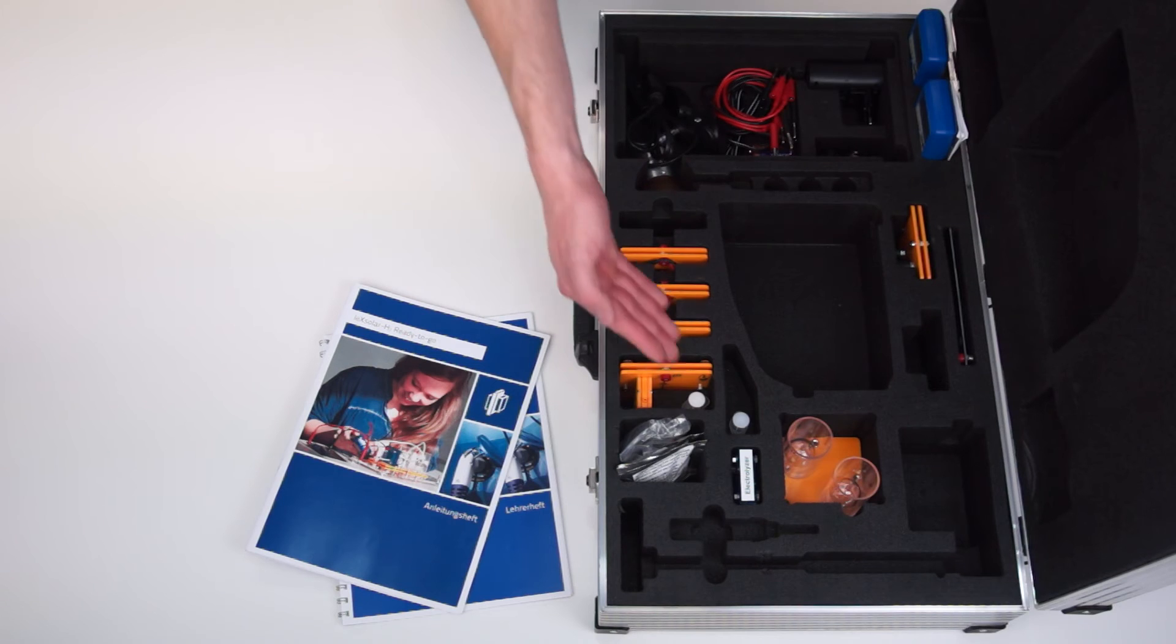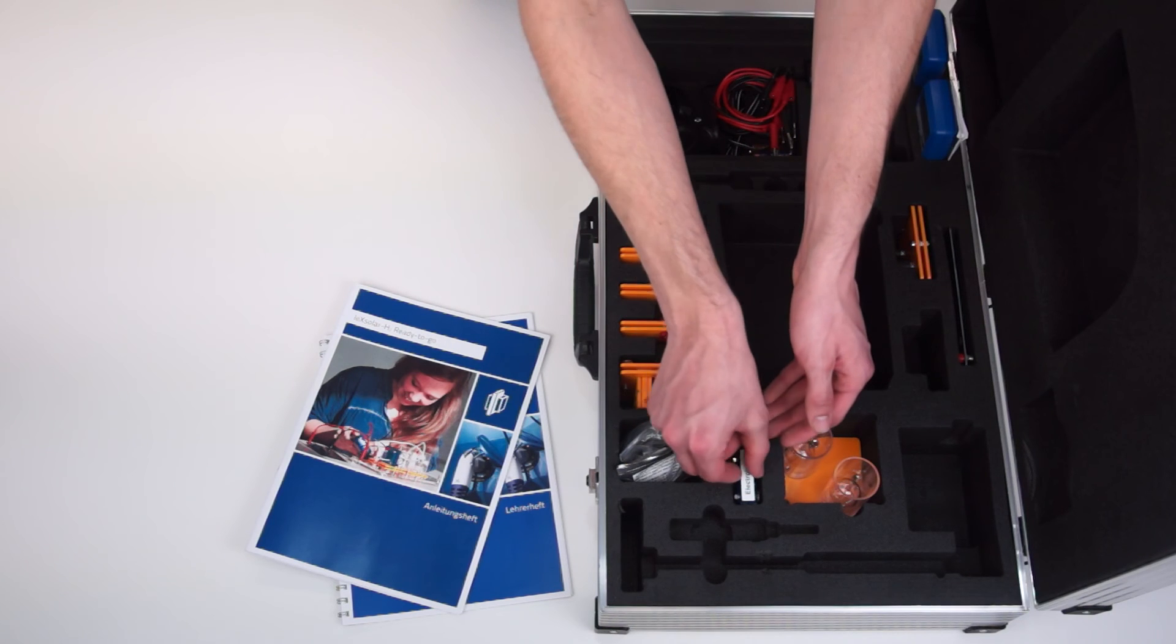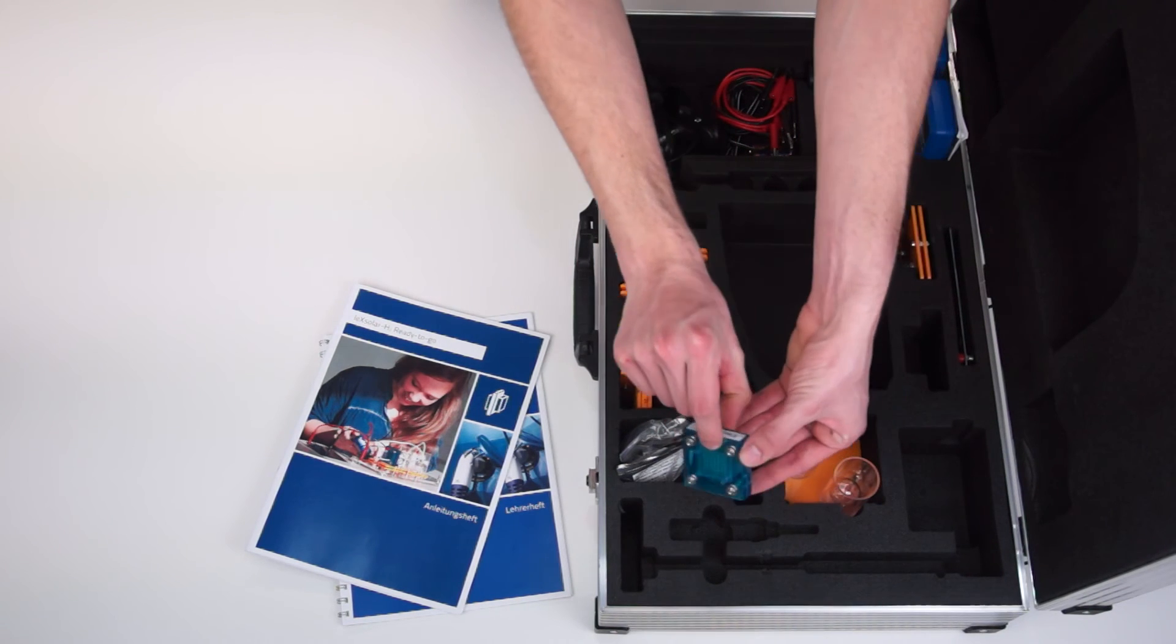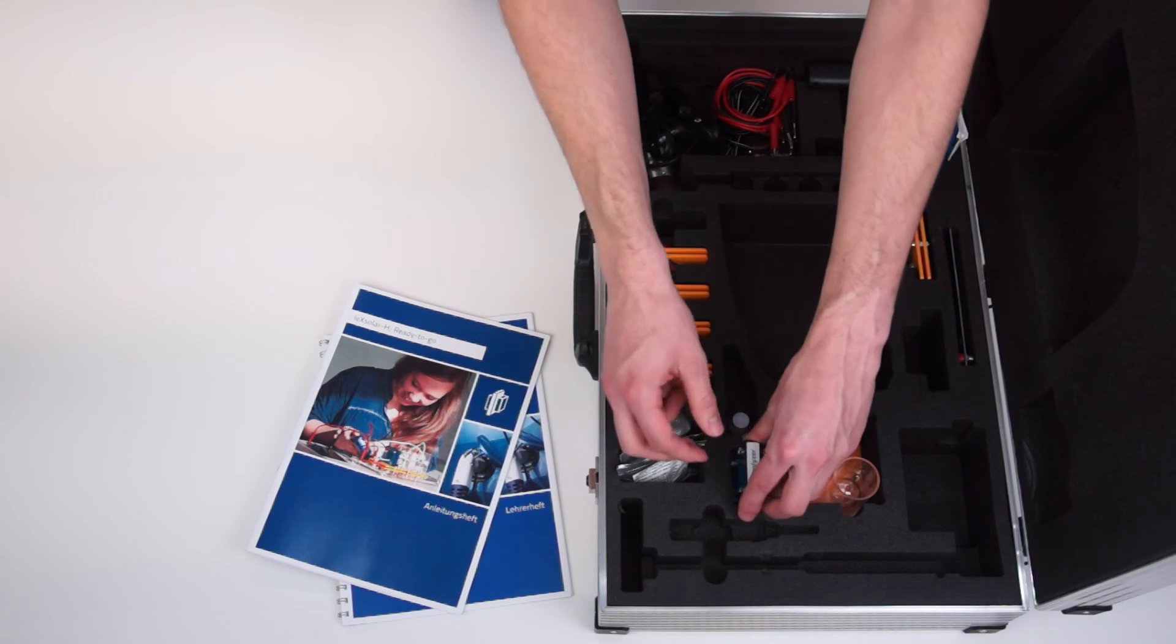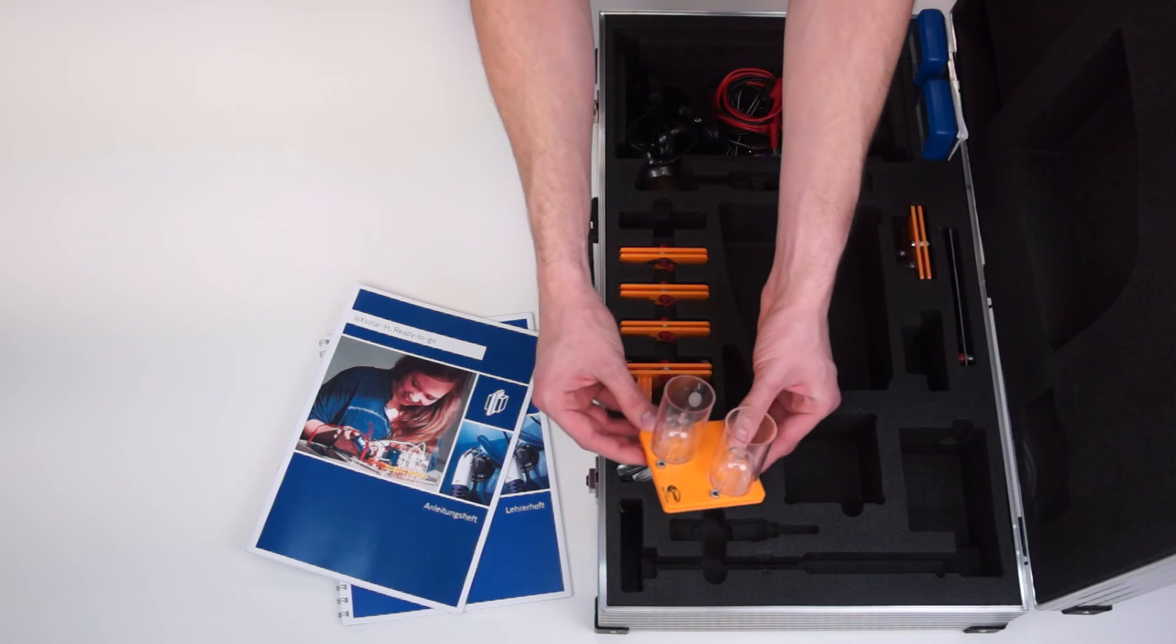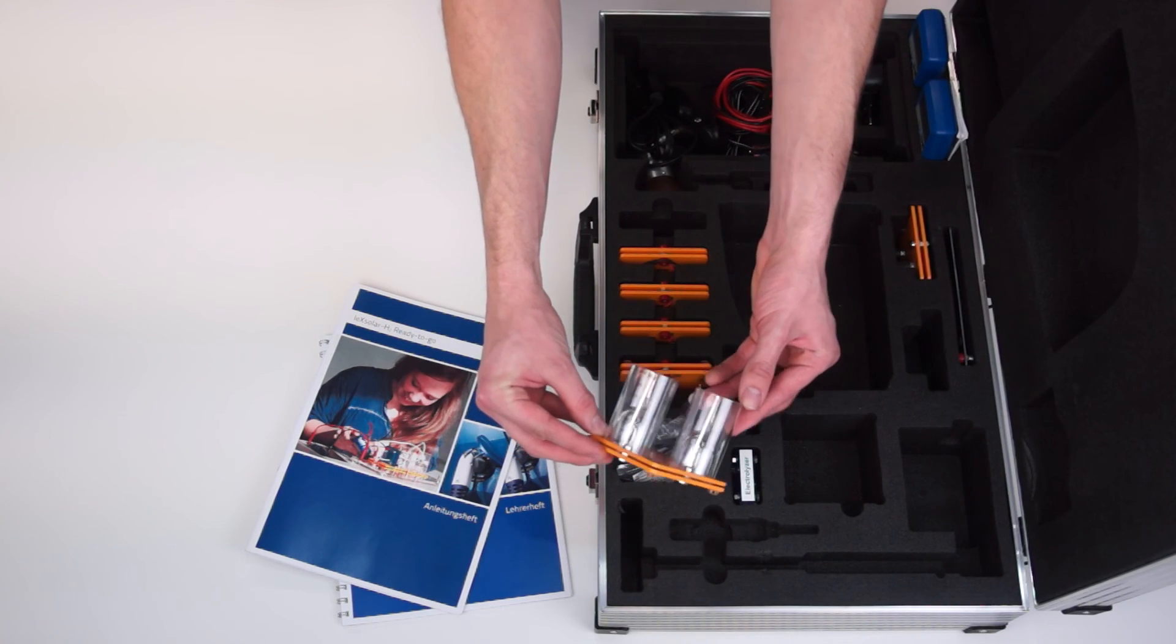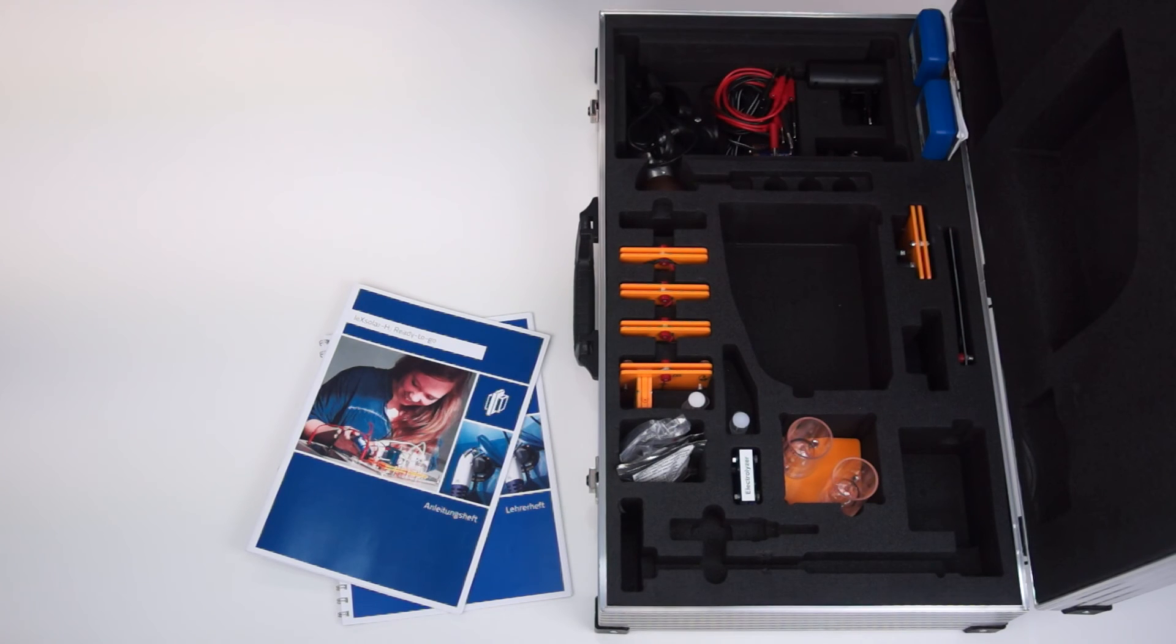Instead of the H2 charger, hydrogen can be produced and stored by means of the electrolyzer and the gas storage module. The process of electrolysis can be better observed through the transparent membrane of the electrolyzer. The resulting hydrogen and oxygen are stored in the gas tanks where it is good to see that twice as much hydrogen is produced as oxygen. The electrolyzer can be used in two different ways.